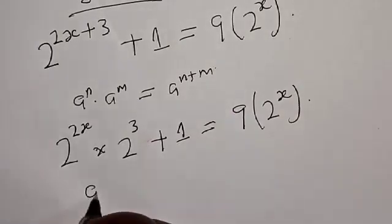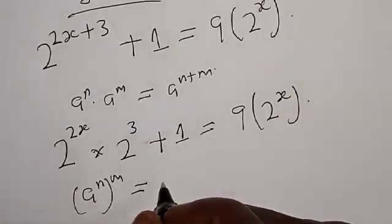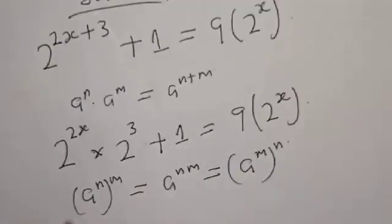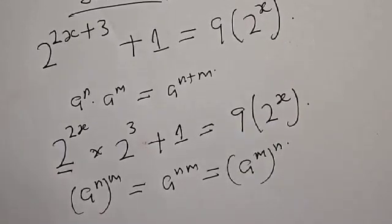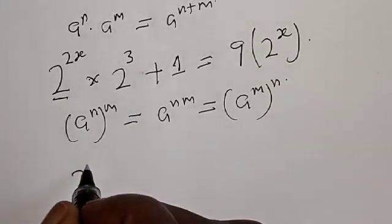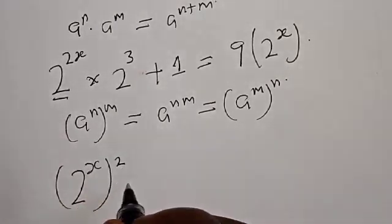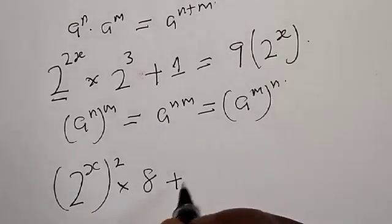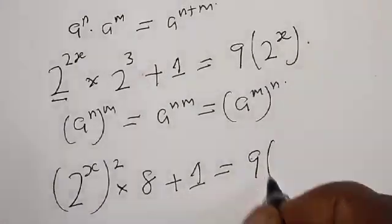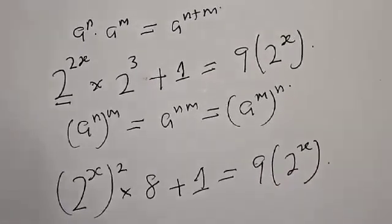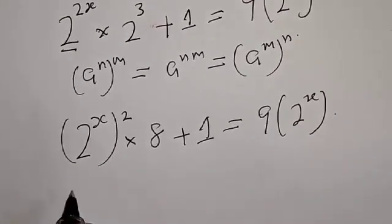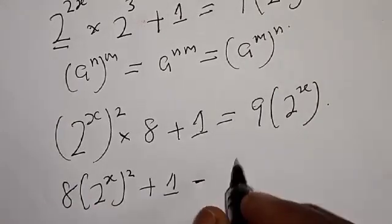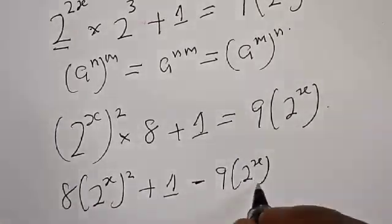Also, if you have a raised to power n raised to power m, that is the same as a raised to power m raised to power n. Therefore, this can be expressed as 2 raised to power s squared, multiplied by 2 raised to power 3 — that is 8. So we have 8 multiplied by 2 raised to power s squared, plus 1, minus 9 into 2 raised to power s, is equal to zero.